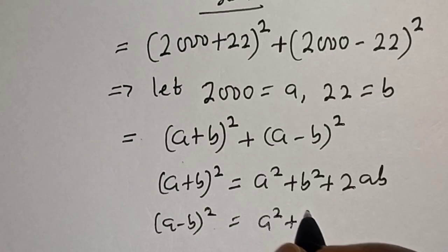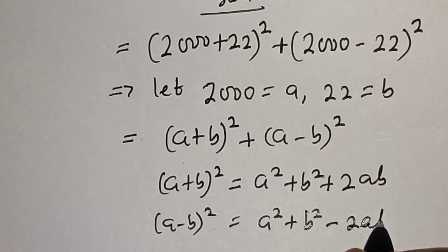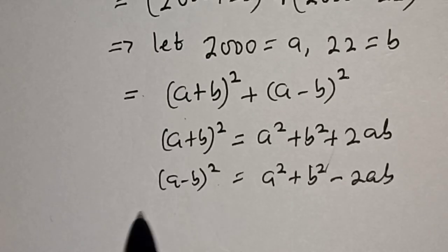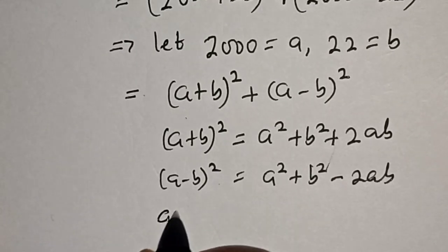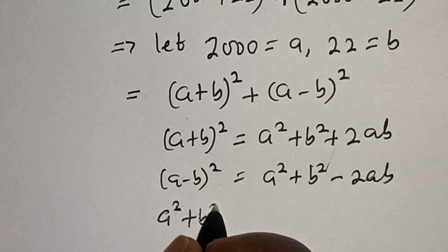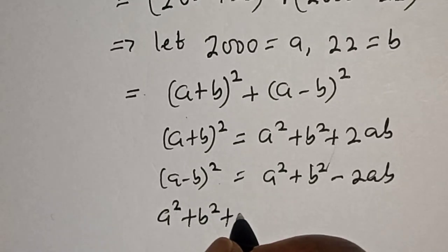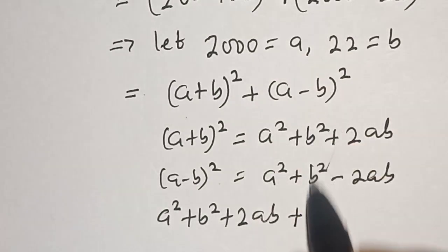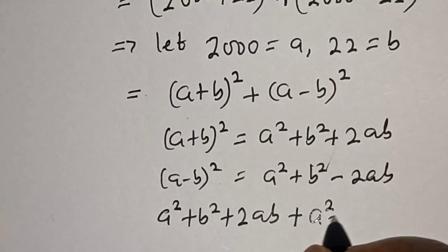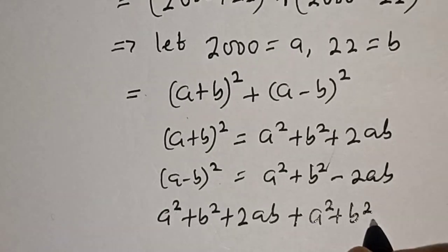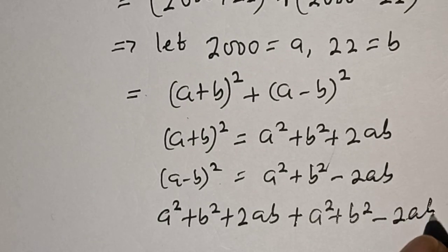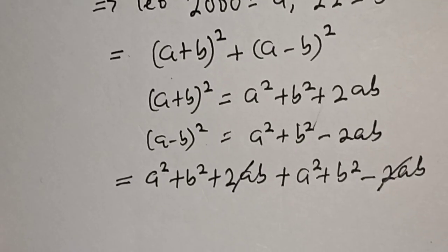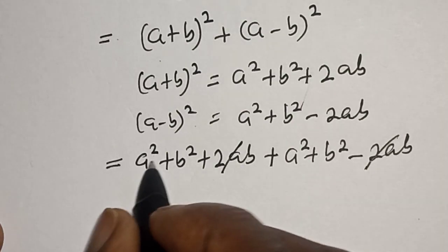Now let's substitute. This is a² + b² + 2ab, plus here is a² + b² - 2ab. This one will cancel this.